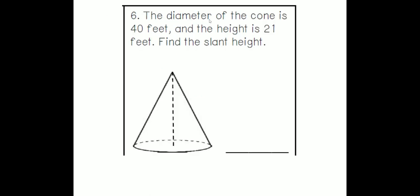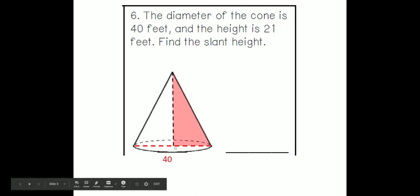Let's try another one. The diameter of the cone is 40 feet and the height is 21 feet. Find the slant height. Remember the diameter is the distance from one end of the circle to the other. So they say the whole thing is 40 feet, which means this length, the radius, which is half the diameter, is 20. The height, regular height, not slant height, is 21. So we're going to put a 21 right there, which means the hypotenuse, or C, is going to be missing. So let's set up our equation.